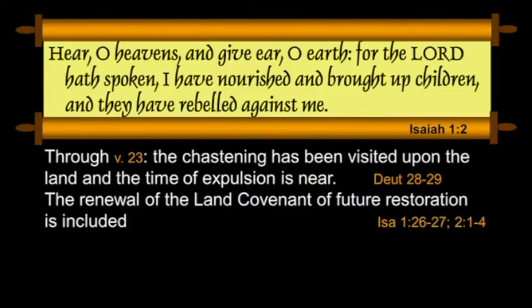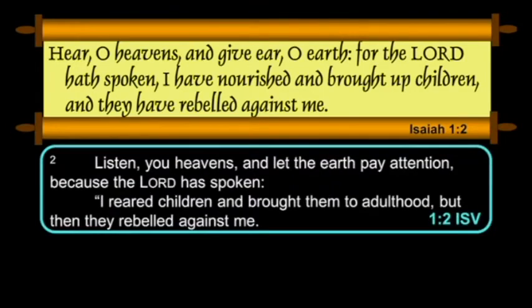It's interesting that Isaiah is positioned midway between Moses, highly venerated in the Jewish community, and the forthcoming Messianic office of the Messiah, namely Jesus — he's right between the two. And all the way through verse 23, the chastening visited upon the land and the time of expulsion is focused on. This is detailed for you in Deuteronomy 28 and 29, and the renewal of the land covenant for future restoration is included in these passages.